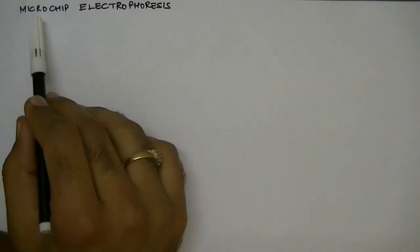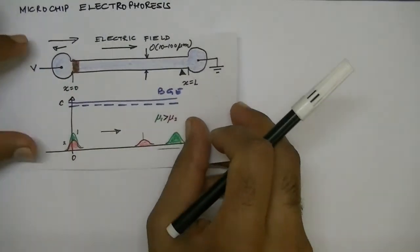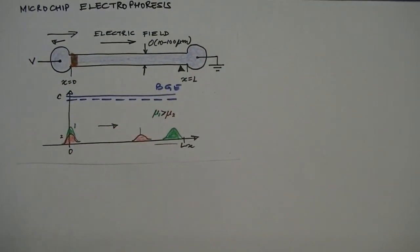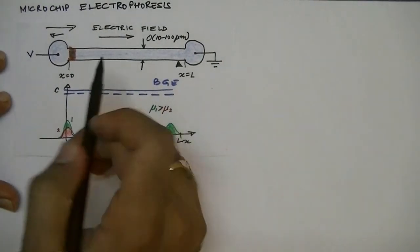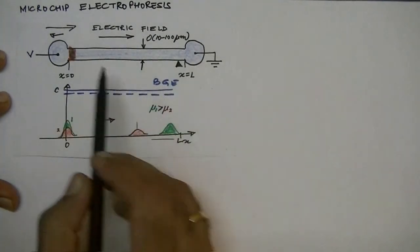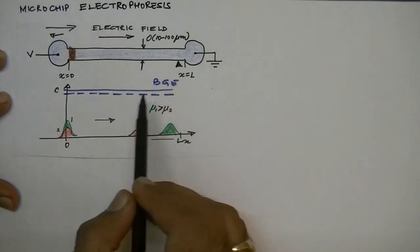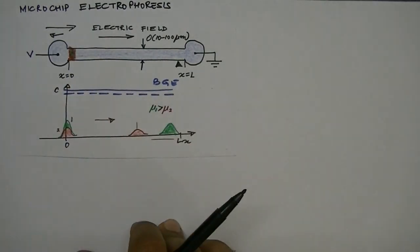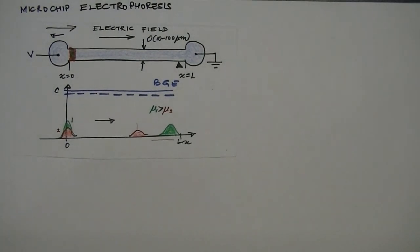In this lecture we will talk about microchip electrophoresis. Microchip electrophoresis is essentially an adaptation of capillary electrophoresis to a microfluidic chip platform. We'll discuss how we can perform the capillary zone electrophoresis experiment that we discussed in the previous lecture in a microfluidic device, but first let's see why we actually want to miniaturize an electrophoretic system.